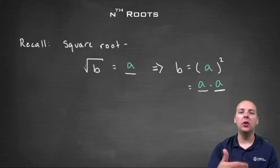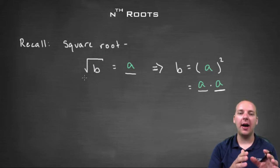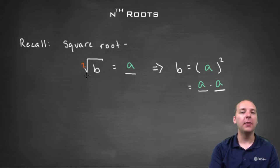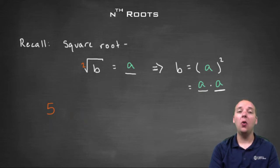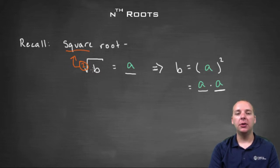You might wonder how you can denote the difference between all these different roots. There's actually something in square root notation that we can't see with our eyes, but it's there. In this little nook of the radical symbol, there's an understood number two. We don't normally write it — similar to how you can write five as five over one, there's always an understood one in the denominator. There's always a two in the radical if no number is present, and that two means you need two factors of a multiplied together to give you b.